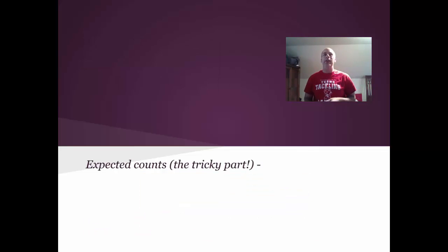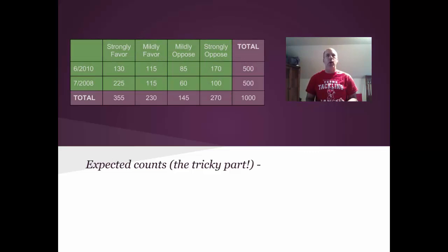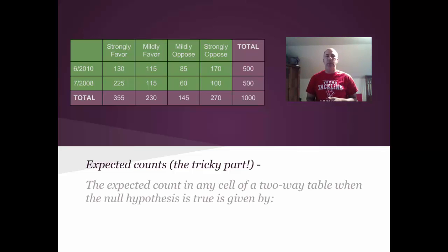What is going to be a little bit different are the expected counts. It's a little tricky, but not all that tricky. We do need to add up all our rows and columns and get the totals here. Notice that 500 people were surveyed in 2008, also in 2010, and we also have the column totals. We have a total of 1,000 people. In this example, we had 500 people in each year. It's not necessary that those be equal to each other, but it does make it somewhat convenient here when we do the computations.